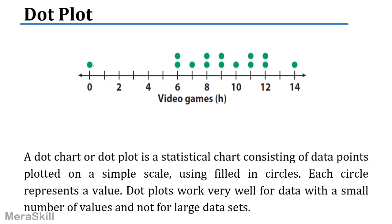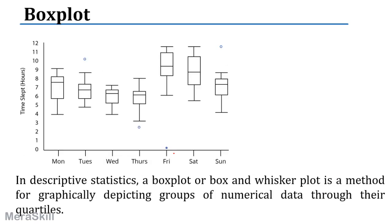A dot plot is a statistical chart. For example, this could represent hours of video games watched: zero hours by one person, six hours by two persons, seven hours by one person. This is simple enough to understand, but it works only for a small set of data — a small number of values, not for large datasets.